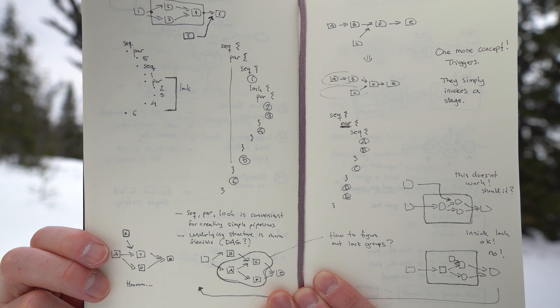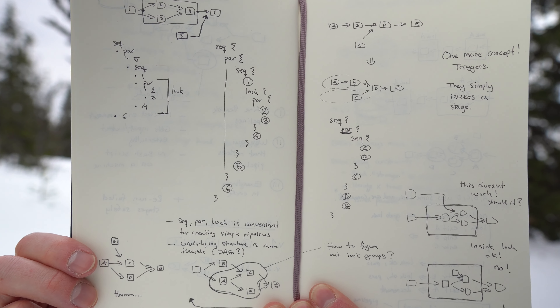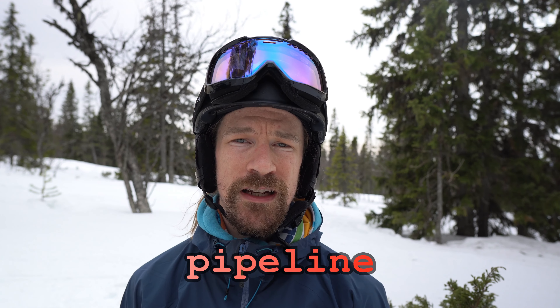I started to think about how to define pipelines in code and I came up with these sequential and parallel blocks which you can nest arbitrarily. With those kind of primitives you can create quite flexible pipelines, but it's not as flexible as I would like them to be. So I concluded that the underlying representation for a timeline has to be a DAG, a directed acyclic graph, similar to what git uses.